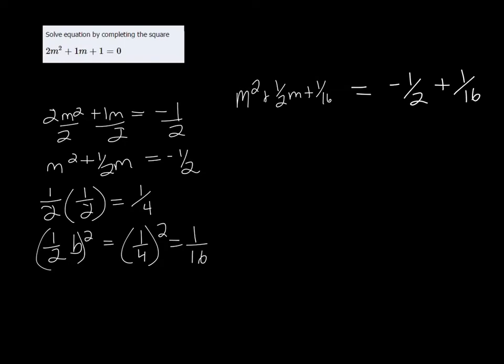So on the left side here, this is a perfect square trinomial now, and it factors to M plus half of B. Half of B was ¼, so it would be (M + ¼)².